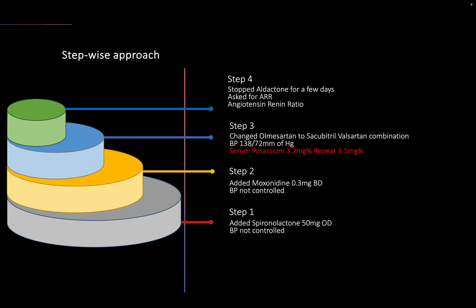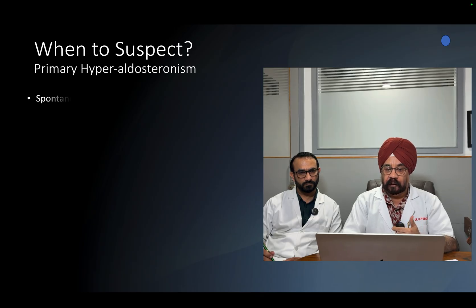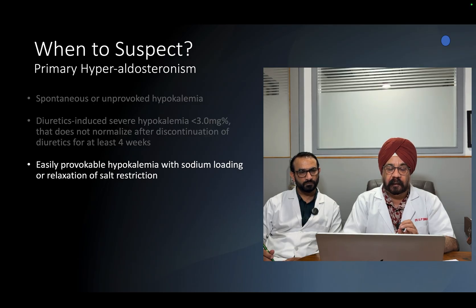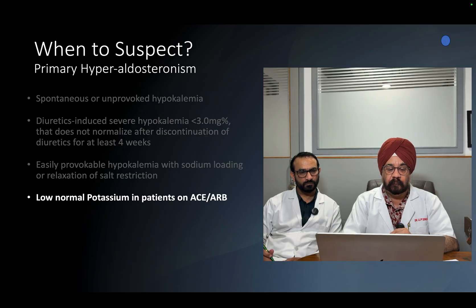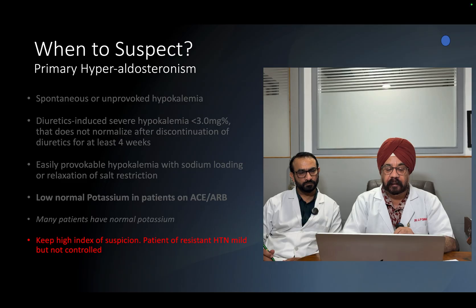We continued the rest of the medicines, stopped the aldosterone antagonist, and ordered an aldosterone-to-renin ratio (ARR). When should we suspect hyperaldosteronism? Key situations include spontaneous hypokalemia, diuretic-induced severe hypokalemia persisting even after stopping diuretics, hypokalemia with sodium loading, and low potassium despite being on ACE inhibitors or ARBs. However, most patients have normal potassium in early stages, so we must keep our index of suspicion high.